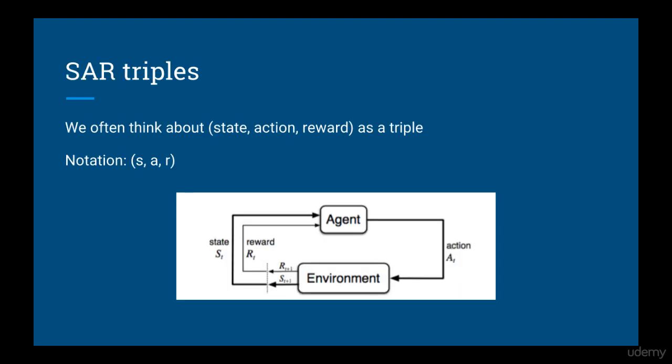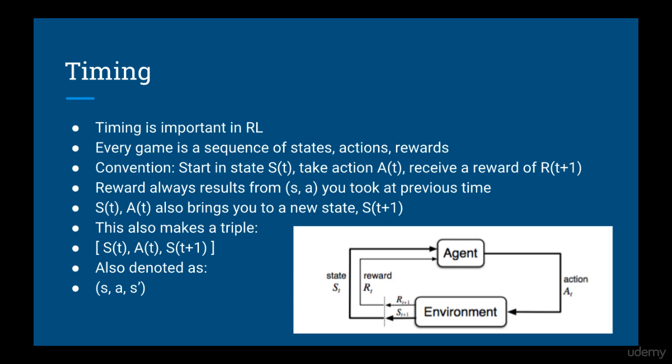The last three things we talked about — state, action, and reward — are often thought about as a triple. You're in a state, you take an action, and you get a reward. We call these SAR, or state-action-reward triples. In reinforcement learning, timing is an important concept as well, since every time you play a game you get a sequence of states, actions, and rewards.